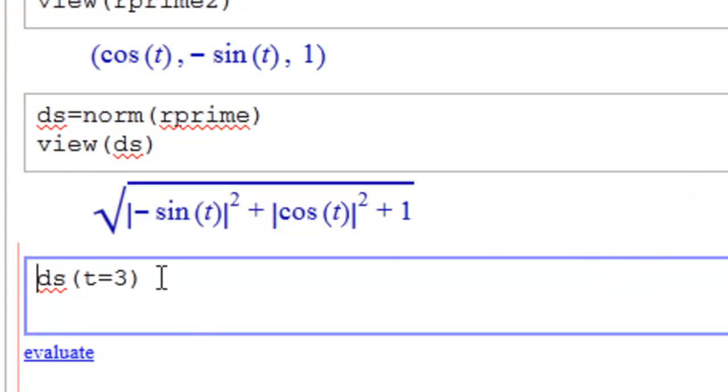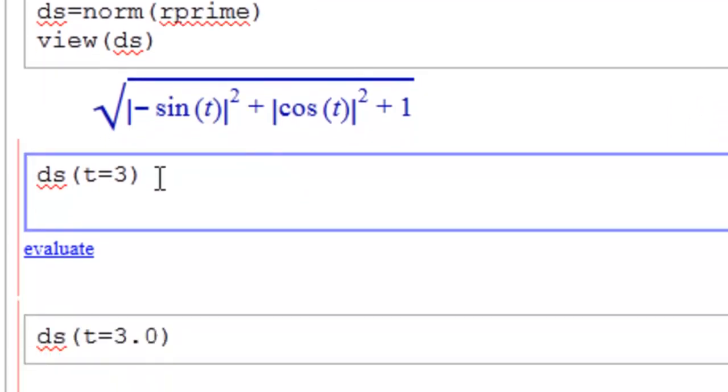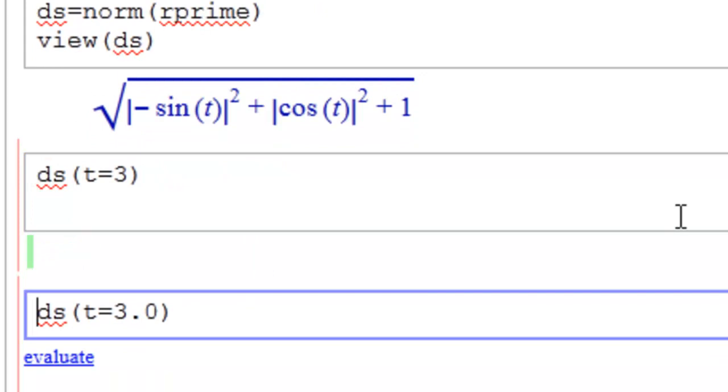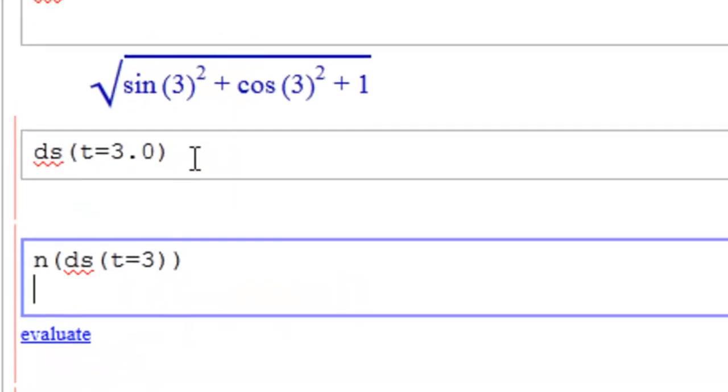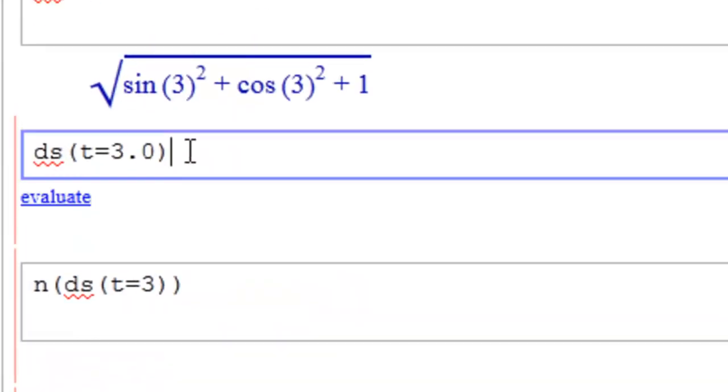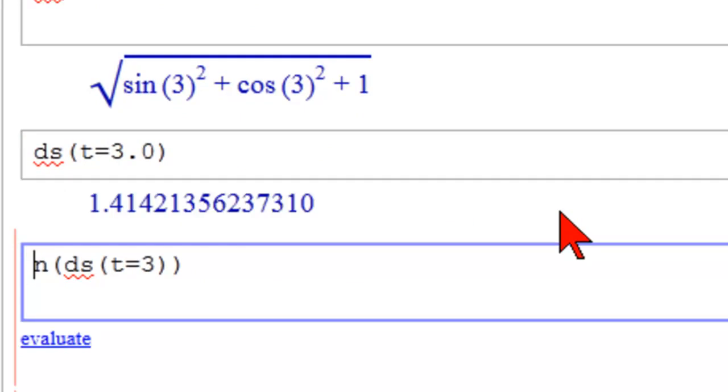And then here's where we're going to evaluate this function at t equal to 3. So we should get a number, but we don't because it's looking for an exact answer. So then if we put 3.0 in and hit evaluate, we should get a number now. And notice it's the square root of 2 because these add up to 1, of course.